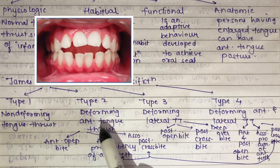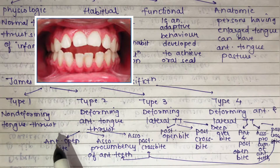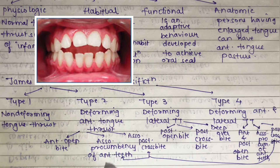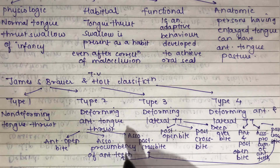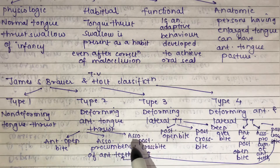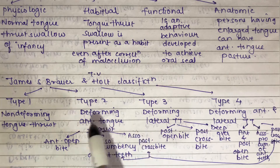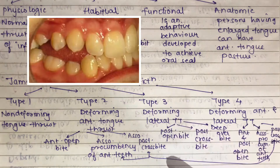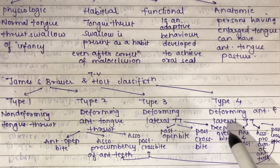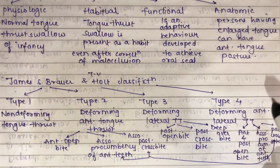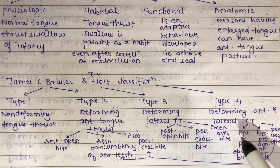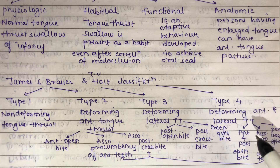Anterior tongue thrust (Type 2) is divided into three subgroups: anterior open bite, procompensation of the anterior teeth (flaring of maxillary anterior teeth), and association with posterior crossbite. Type 3 is divided into posterior open bite, posterior crossbite, and deep overbite. Type 4 subgroups are anterior and posterior open bite, procompensation of the anterior teeth, and associated posterior crossbite.